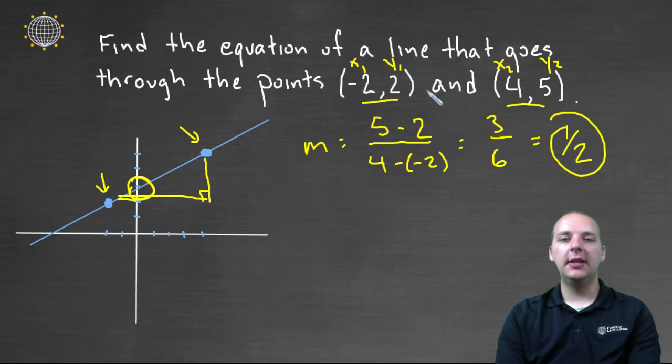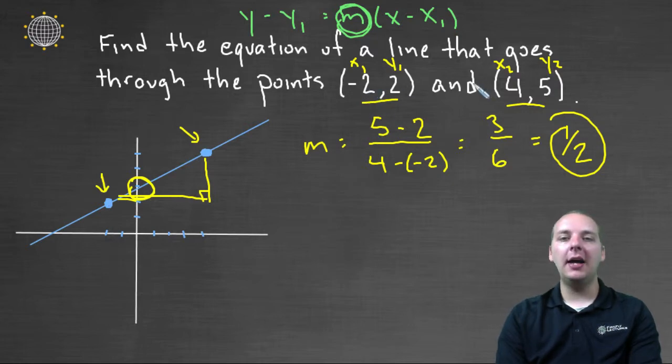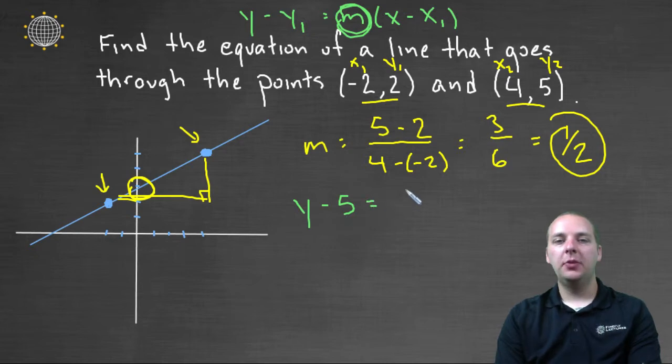So that's going to be our m. And now we also just need a point on the line. So let me jot down point slope form just to refresh our memory. Y minus y one equals m parenthesis x minus x one. So the m is done. I've got that taken care of. Now to be honest with you, we could use either point as our x one y one. It doesn't matter, both would lead to the correct answer. I think I'll use four five simply because they're already positive, but it makes no difference. You could use the other one. So we'd have y minus five equals one half parenthesis x minus four.